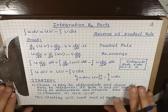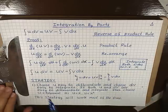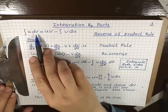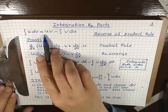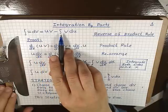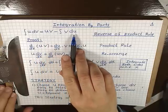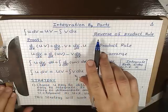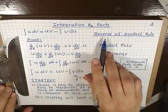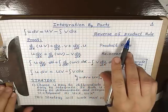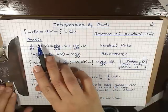Today we're going to talk about integration by parts. The integral of u dv is equal to uv minus the integral of v du. This is in fact the reverse of the product rule. Let's do a proof.